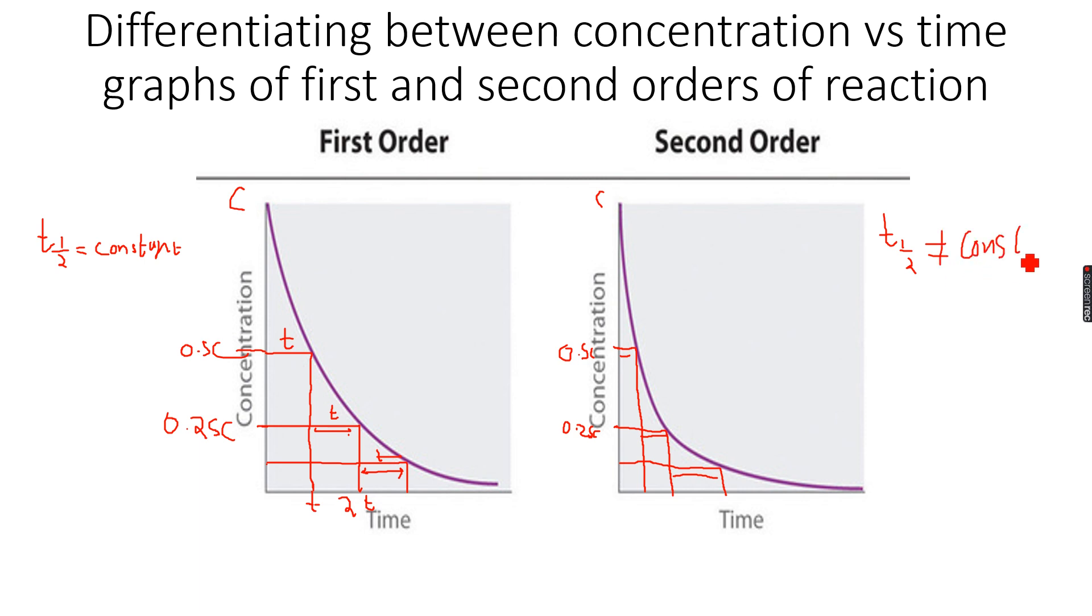So you can use half-life, you can make these blocks, and you can see whether half-life is constant. So this will become 3t. So it takes t seconds to go from c to 0.5c. It takes another t seconds to go from 0.5c to 0.25c. And it takes another t seconds to go from 0.25c to 0.125c.